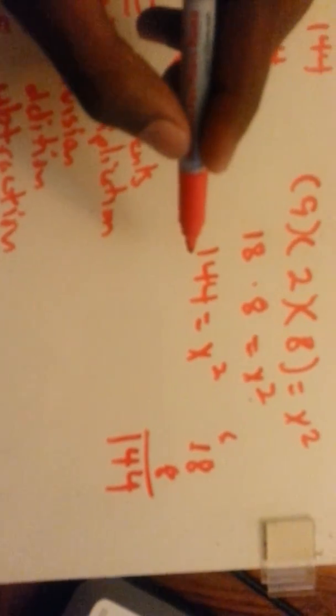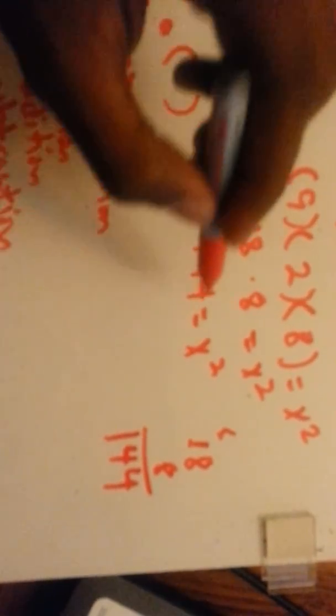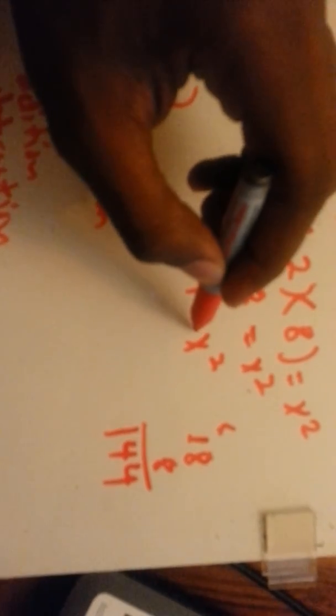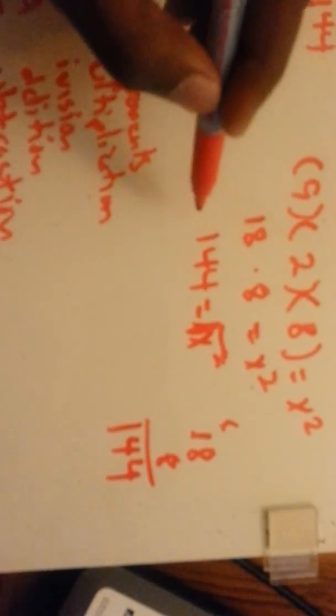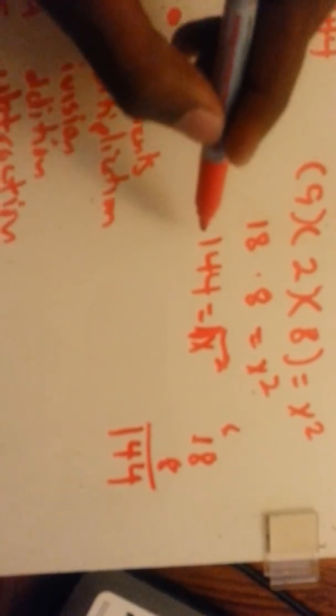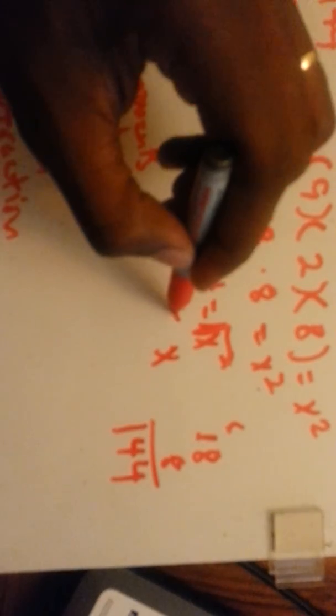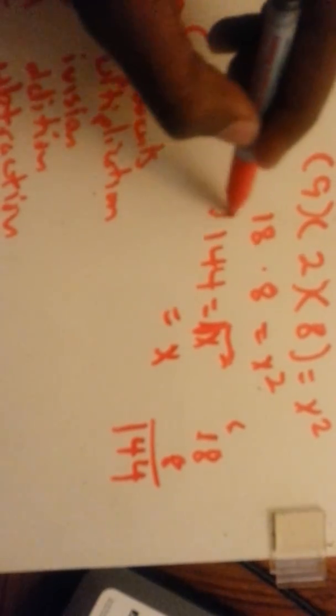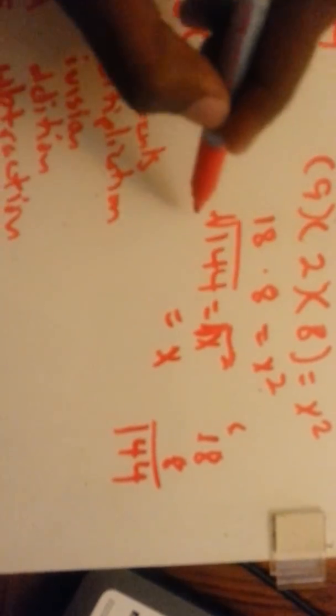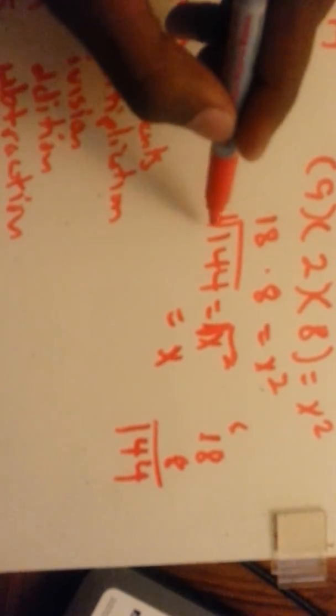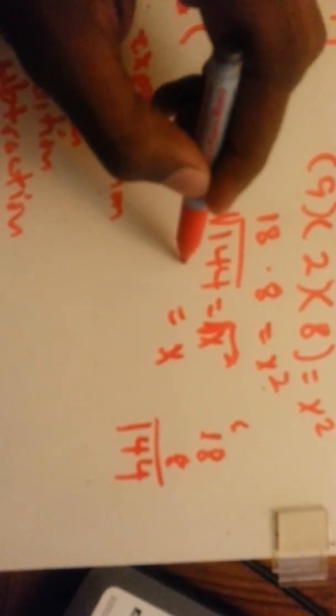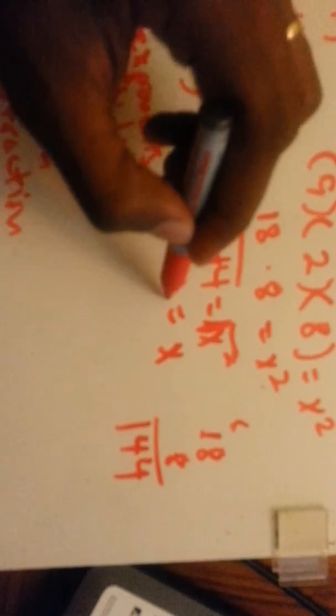And to solve for x, we have to take the square root of both sides. Square root of x squared is x, and the square root of 144 would be 12.